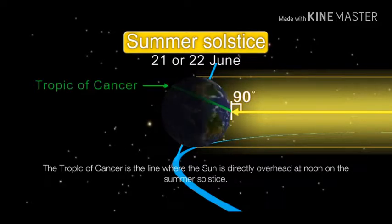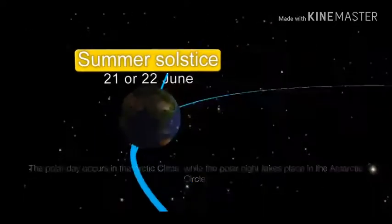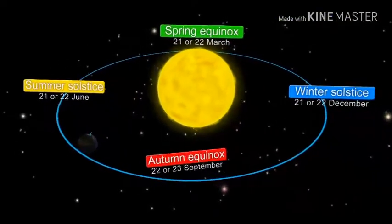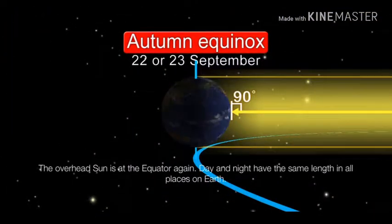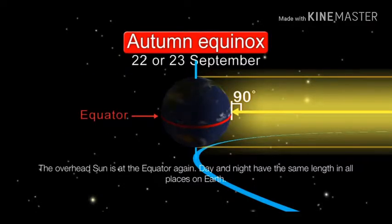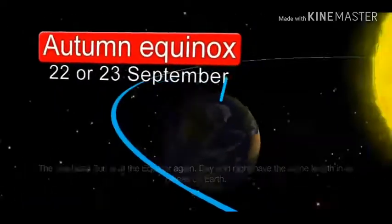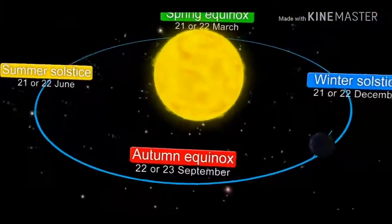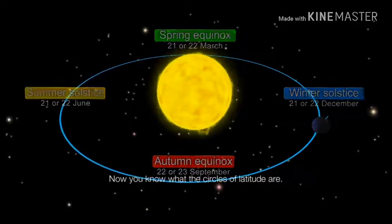The polar day occurs in the Arctic circle while the polar nights take place in the Antarctic circle. The overhead Sun is once again at the equator, and day and night have the same length at all places on the earth. Now you know what the circles of latitude are.